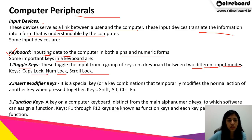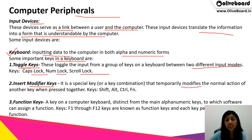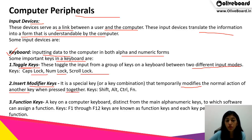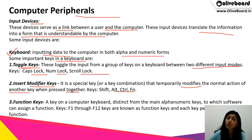The second type of keys are modifier keys. These are special keys that temporarily modify the normal action of another key when pressed together. So when we press Shift, Alt, Control, or Function with another key, we can change the function of that particular key with the help of these keys. Hence they are called modifier keys.